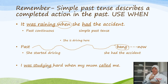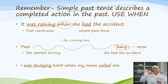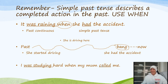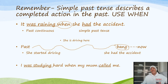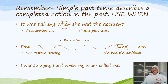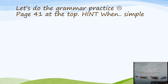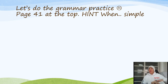Another example: 'I was studying hard when my mom called me.' 'Was studying' is past continuous — a continuing action. 'Called' is simple past — a completed event. When you see 'when,' you change the second part into the simple past. Follow this rule for this class and for the midterm test. Sometimes it is different, but for this textbook and everything in this class, we're following that rule only.